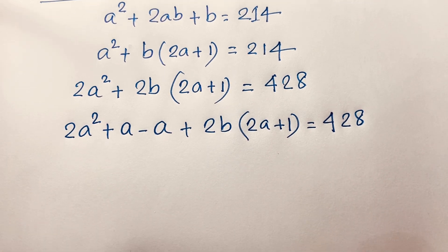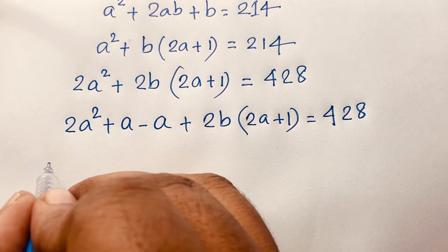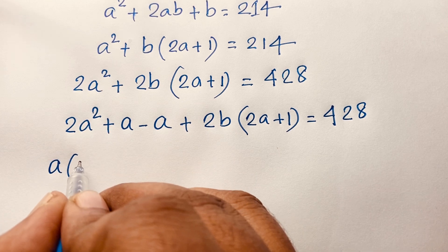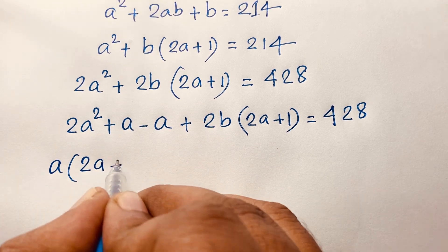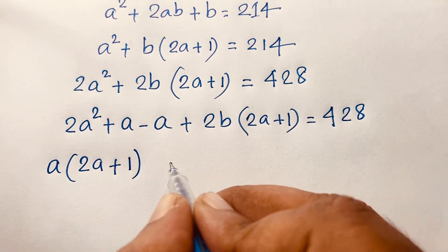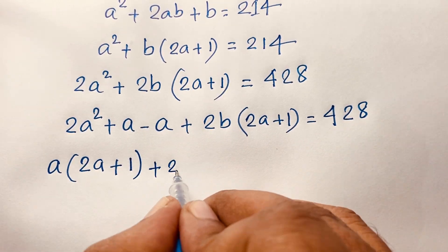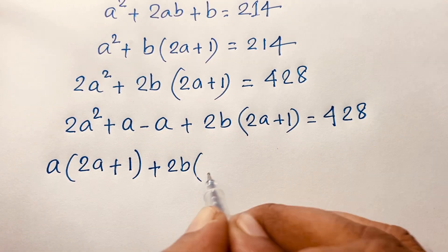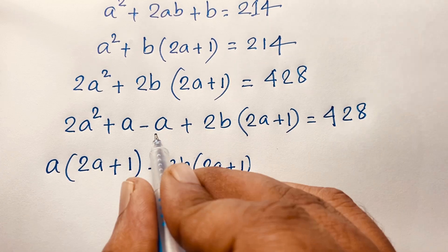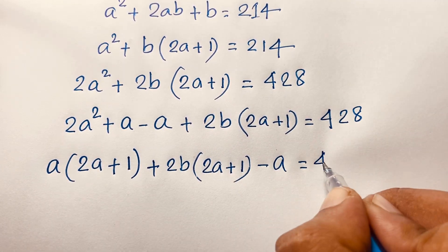Now you can see here is a is common. So this a: 2a squared divided by a will be 2a, this a divided by this a will be 1. And I can see here is plus 2b times 2a plus 1, and this negative a is equal to 428.